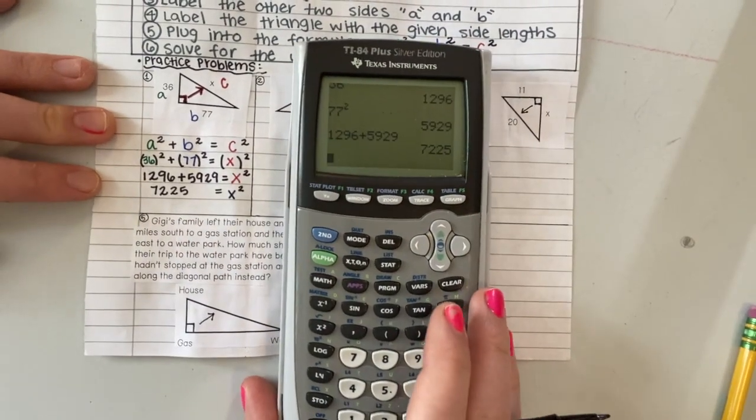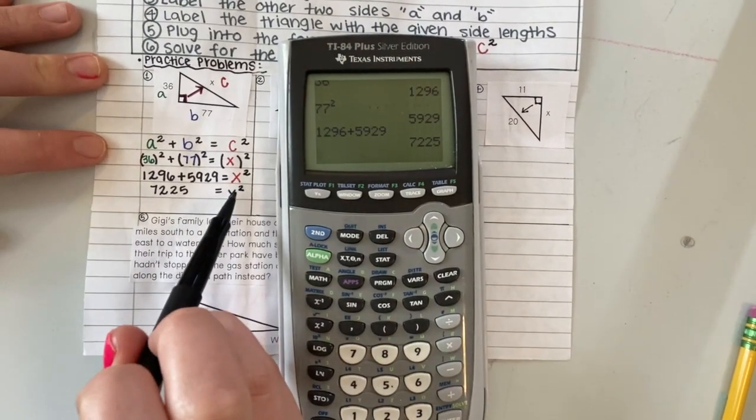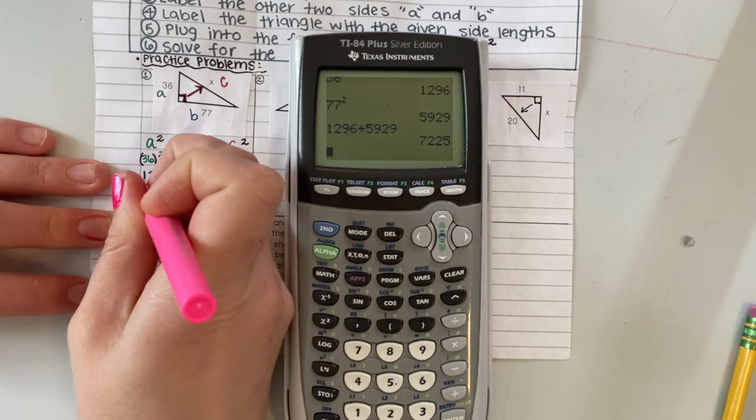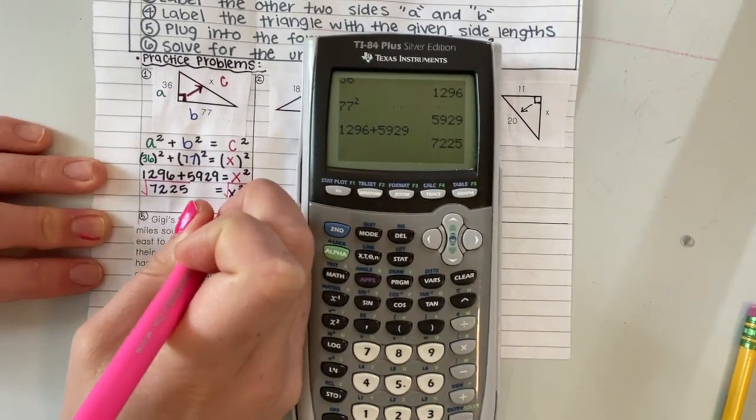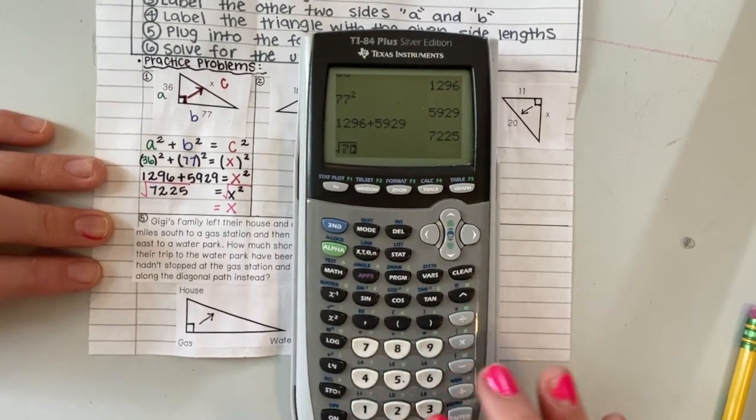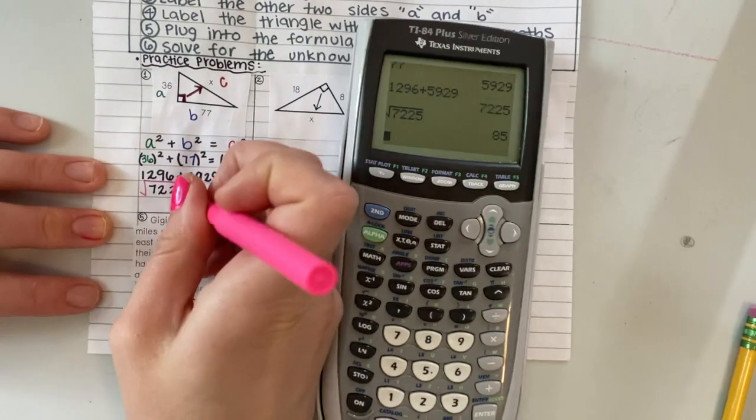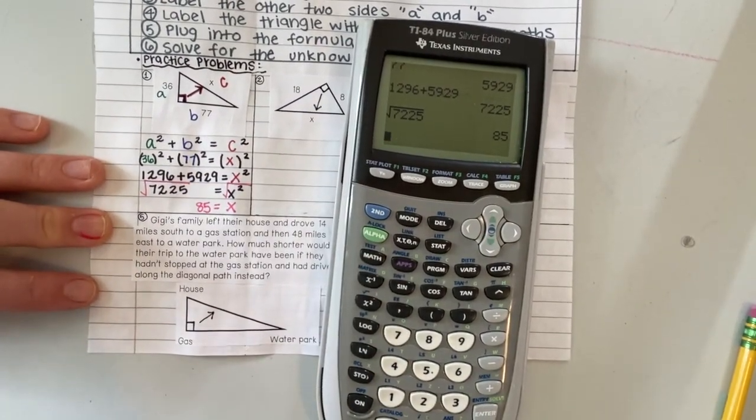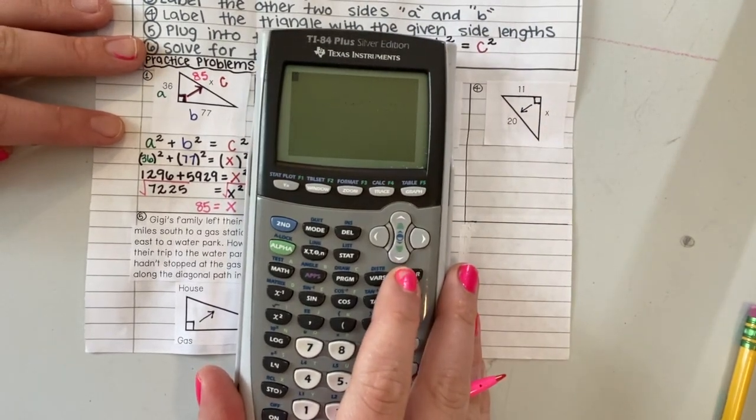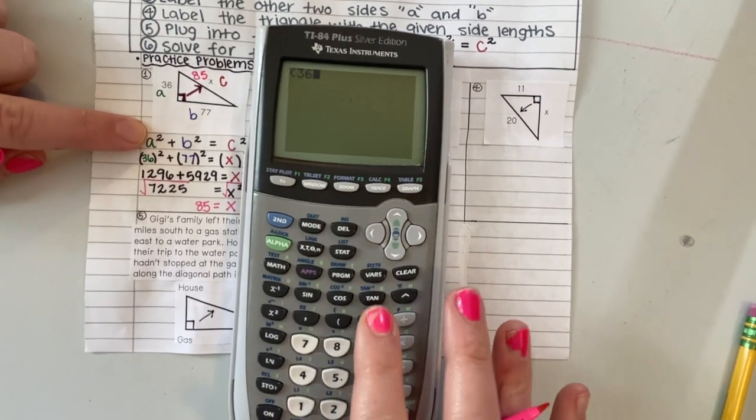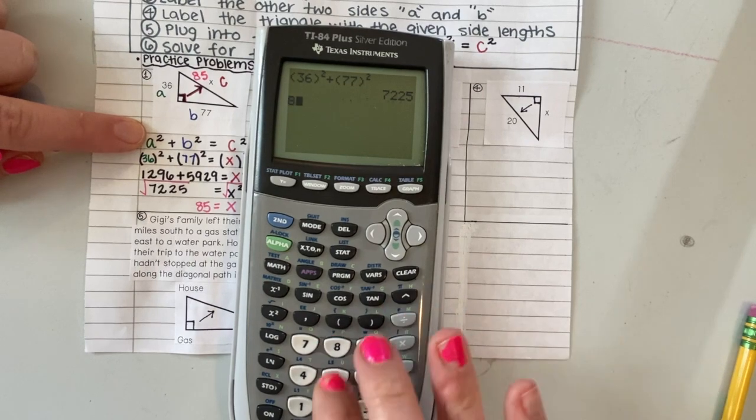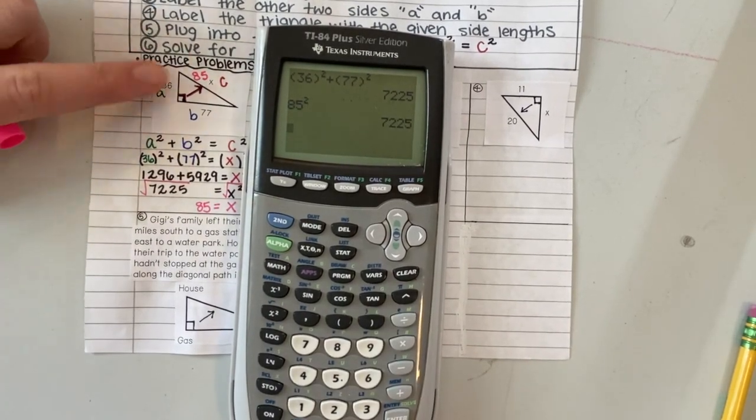Notice that I still don't have X completely by itself. We need to get rid of the little squared. Remember what I do for the little squared symbol is in order to get rid of it I have to take the square root of both sides. So I'm taking the square root in order to get X totally by itself. So the square root of 7,225 is 85. So then I know my value for X is 85. And I can check this problem by plugging in. So I can say, okay, A squared which is 36 squared plus B squared 77 squared equals 7,225. I'm going to double check to make sure that's what my C squared is, and it is, so I know I am correct.